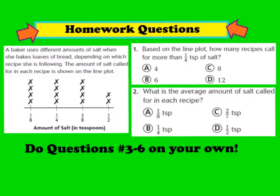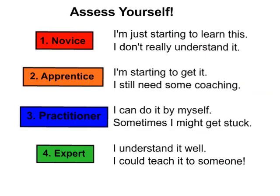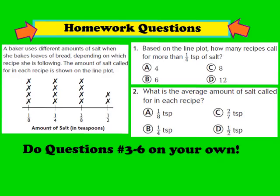For tonight's homework, complete question 1 and question 2, as well as numbers 3 through 6 in your GoMath workbook on page 184. Don't forget to assess yourself somewhere on your homework page: are you a 1 (novice), 2 (apprentice), 3 (practitioner), or 4 (expert)?